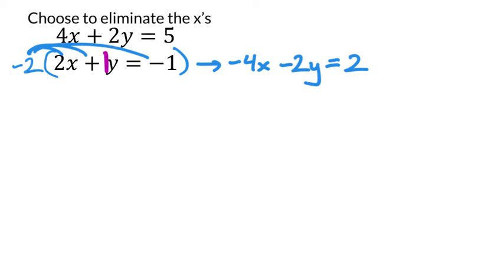Now, we didn't do anything to that top equation, so it still is 4x plus 2y equals 5.